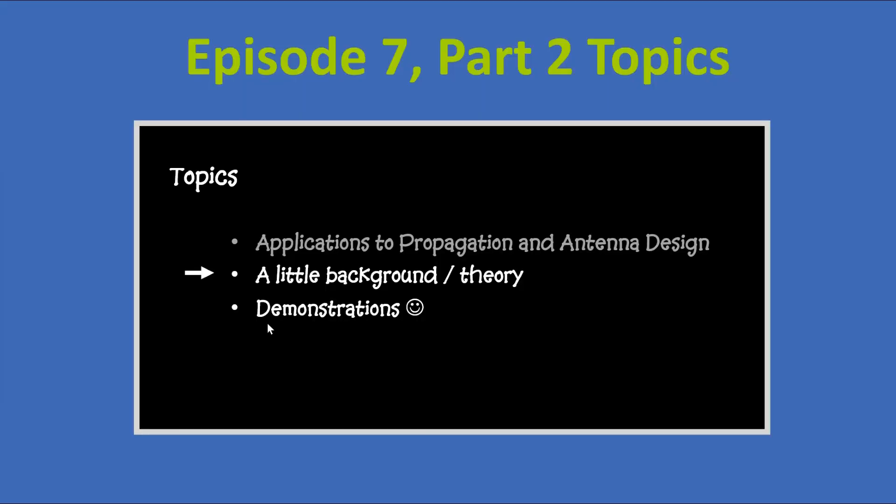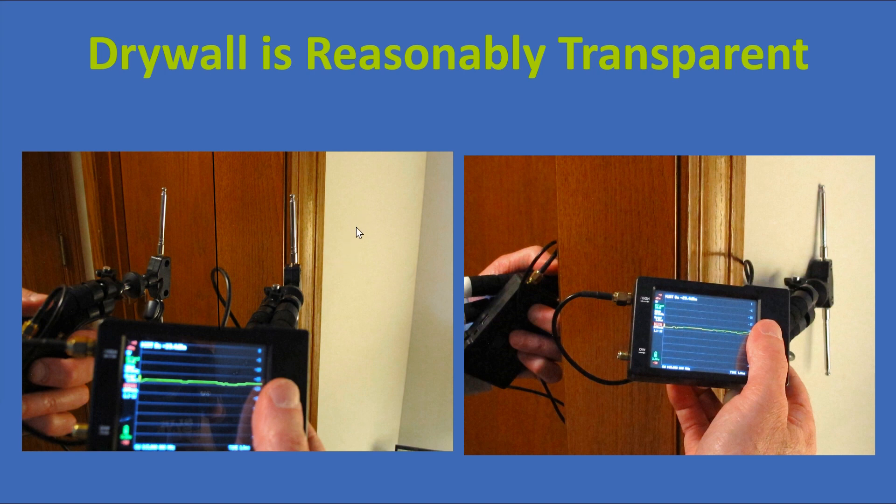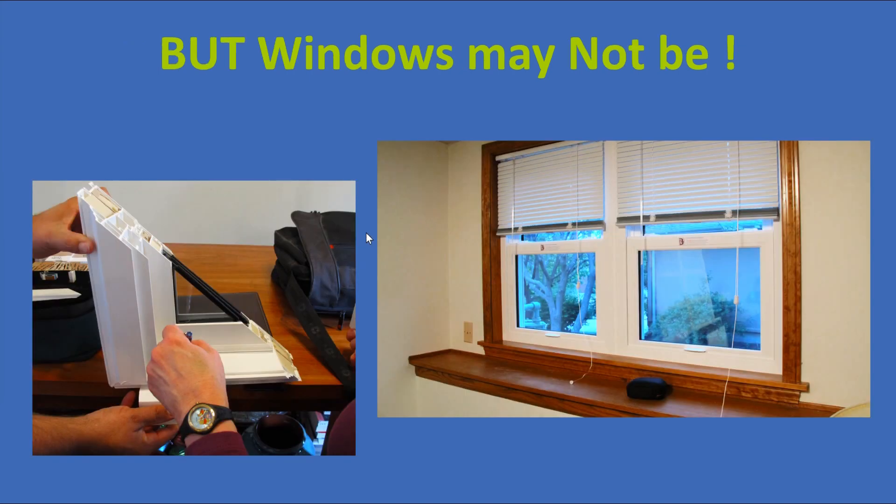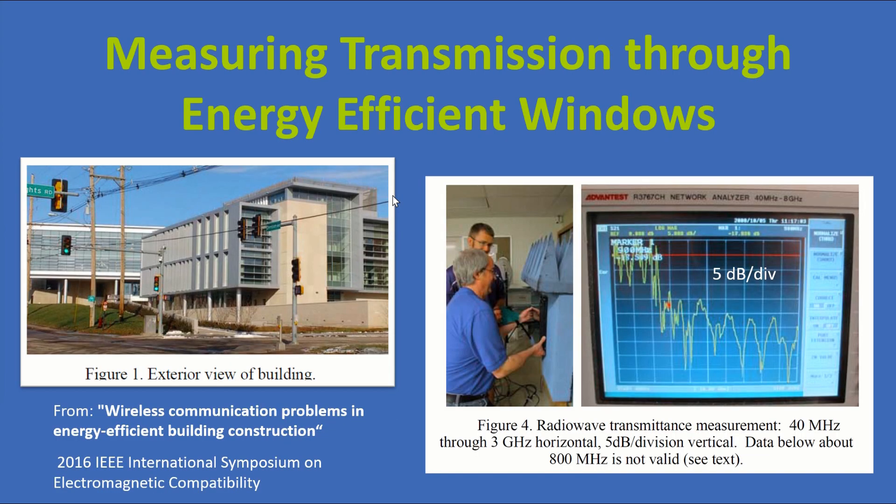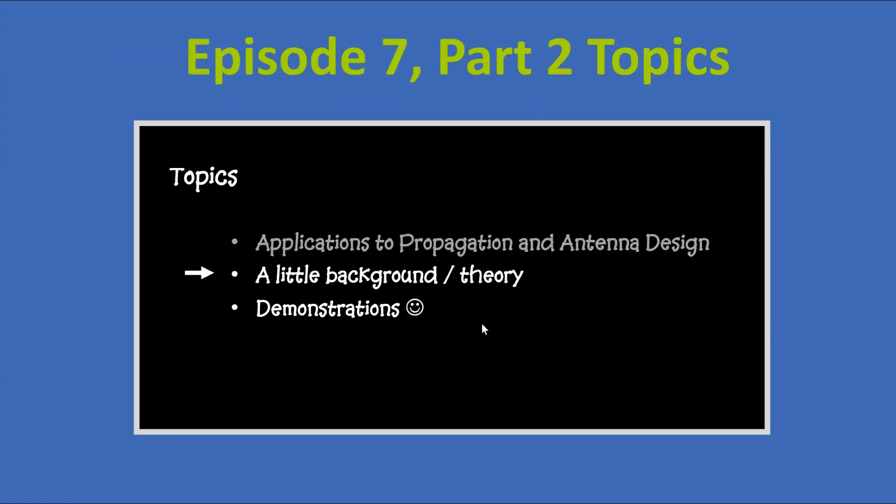We're going to do that in the second half of today's video. Look at signals transmitting through various materials in buildings, for example, such as drywall in a house, or windows in a house, or in a commercial building. So those demonstrations are how we're going to quantify the effects. We're not going to present lots of equations, so don't let the theory bother you here. Let's get started.